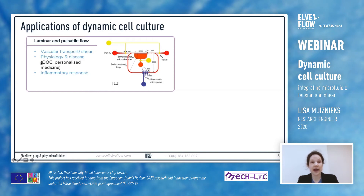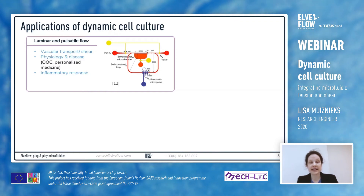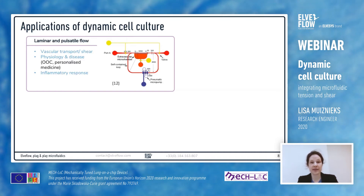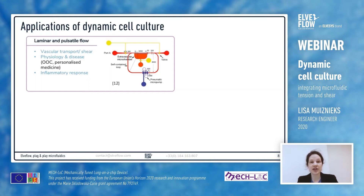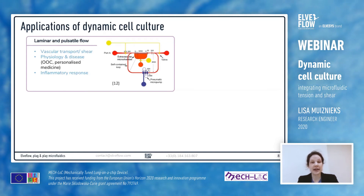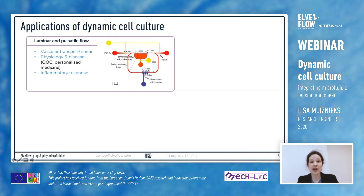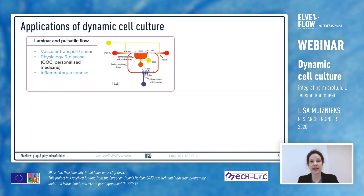Consequently researchers have started using these systems to look at physiological and disease-based states, opening up the field of organ-on-chip technology, where an individual function of an organ is selected to be replicated on the level of a chip. This allows researchers to look at cell interactions, cell behavior, the release of biomolecules, and the response to drugs, and you can start to imagine a personalized medicine approach where a patient's own cells can be seeded and tested on these chips under dynamic conditions.